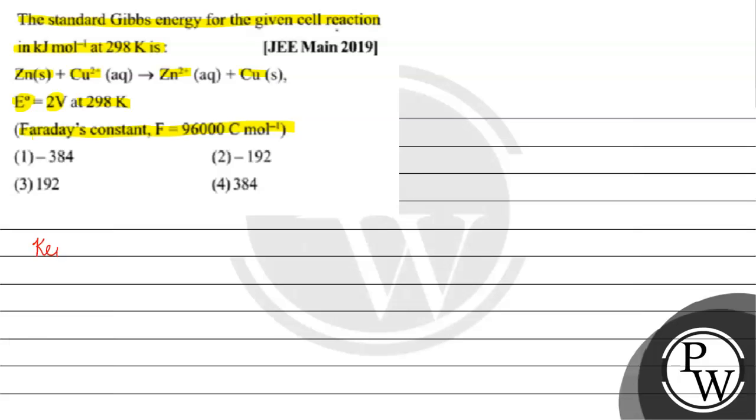The key concept for this question is delta G naught equals minus nFE naught. We have standard Gibbs free energy. The change equals minus n.